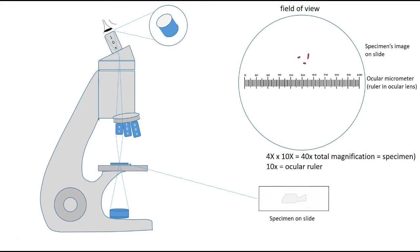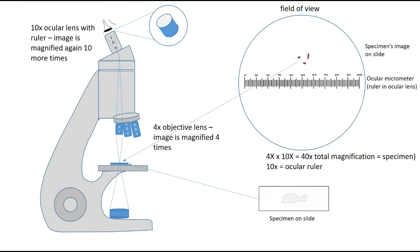Before I show you how to do this calibration, I want to first explain why we need to calibrate the ocular ruler and why you're going to need to do it for every objective lens on your microscope. The image size of any specimen when viewed under a microscope is magnified twice — first by the objective lens and secondly by the ocular lens. In this drawing, my objective lens is a 4x objective lens and my ocular lens is a 10x ocular lens.